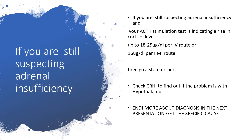The next step is to check the corticotropin-releasing hormone level. This is to find out if the problem lies with the hypothalamus. If the problem is with the hypothalamus and you have not introduced exogenous ACTH, there will be adrenal insufficiency. But if you introduce exogenous ACTH and there is no problem with the adrenal gland itself, you get a good response. Checking the CRH value will indicate whether the problem is at the level of the hypothalamus or not.